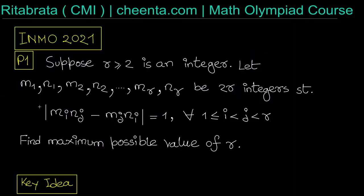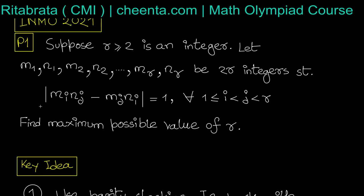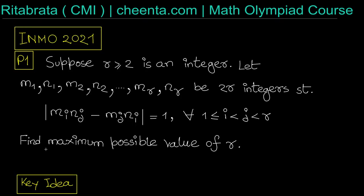The key idea of the solution is to check parity. Since |mᵢnⱼ - mⱼnᵢ| = 1, the quantity mᵢnⱼ - mⱼnᵢ can never be even. That is the key idea. Whenever mᵢnⱼ becomes even for all values, we have to omit those cases.